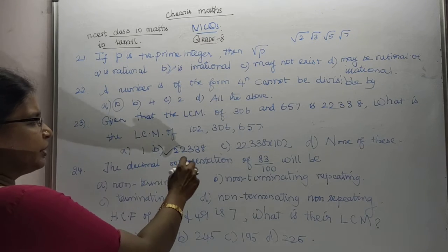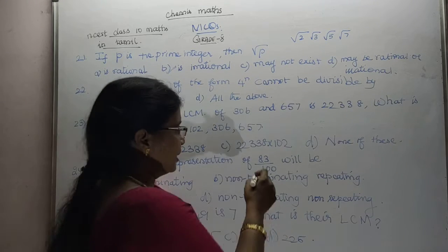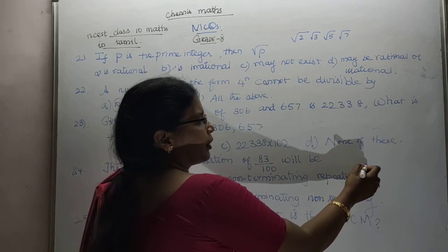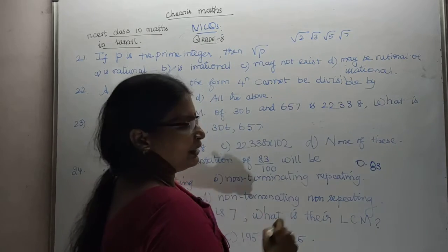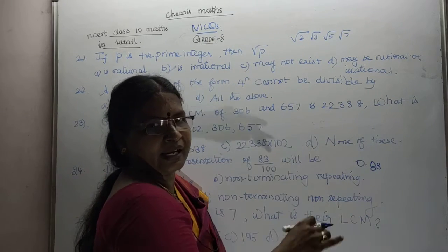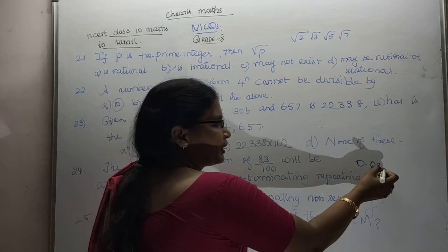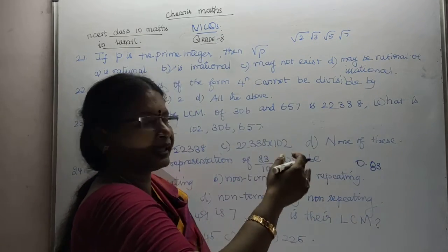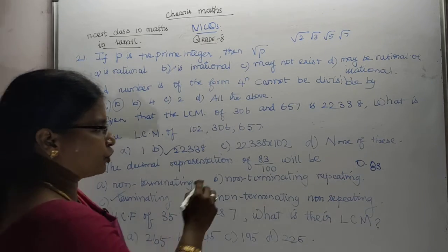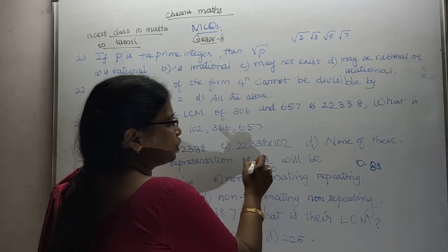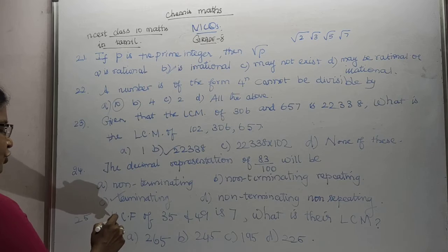Question 24: The decimal representation of 83 by 100, will be terminating or non-terminating? If we don't know what to do, it is 0.83. That's all. 0.83. It is terminating. Therefore, it is terminating. Answer is terminating. You can write the answer.